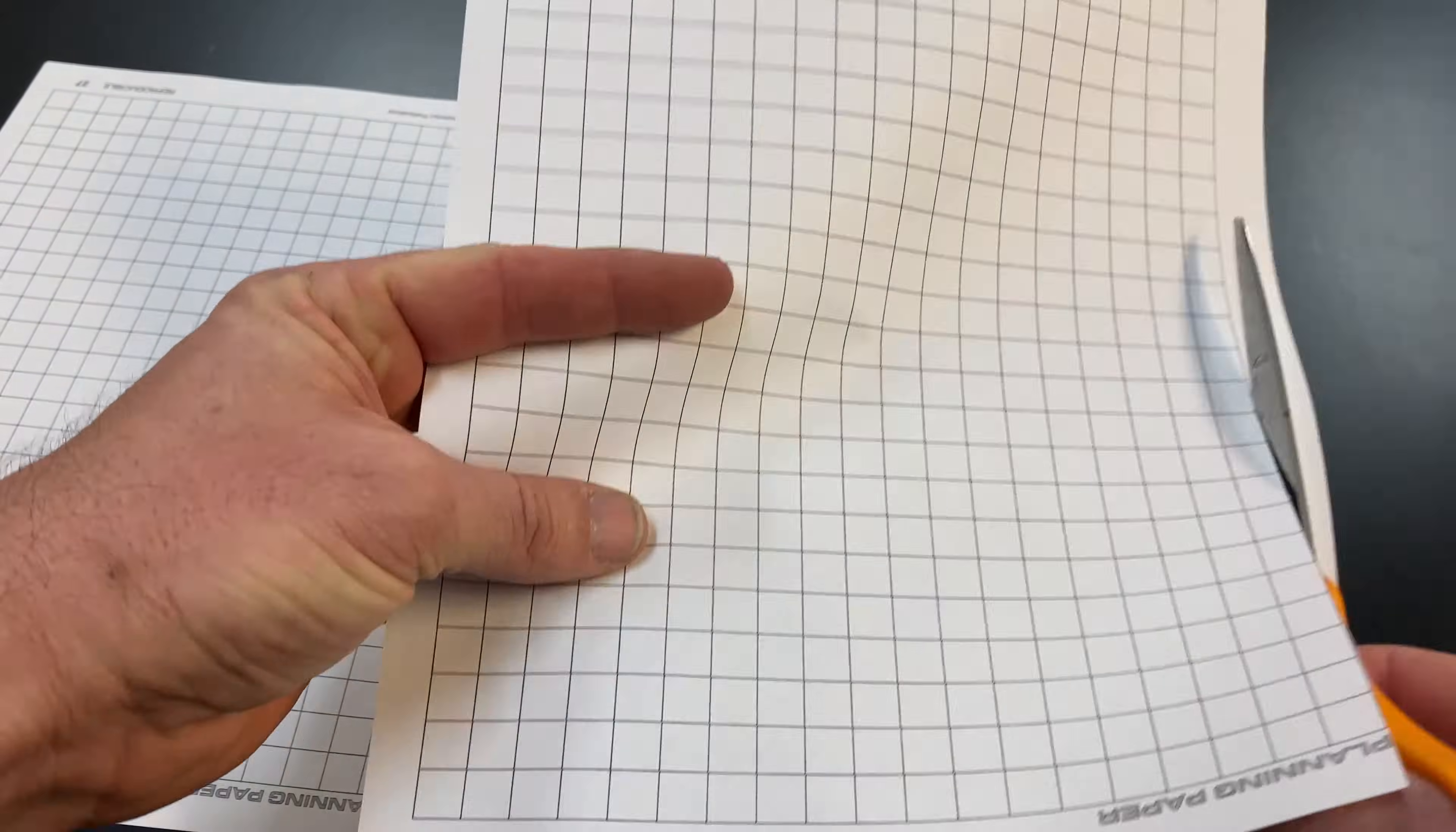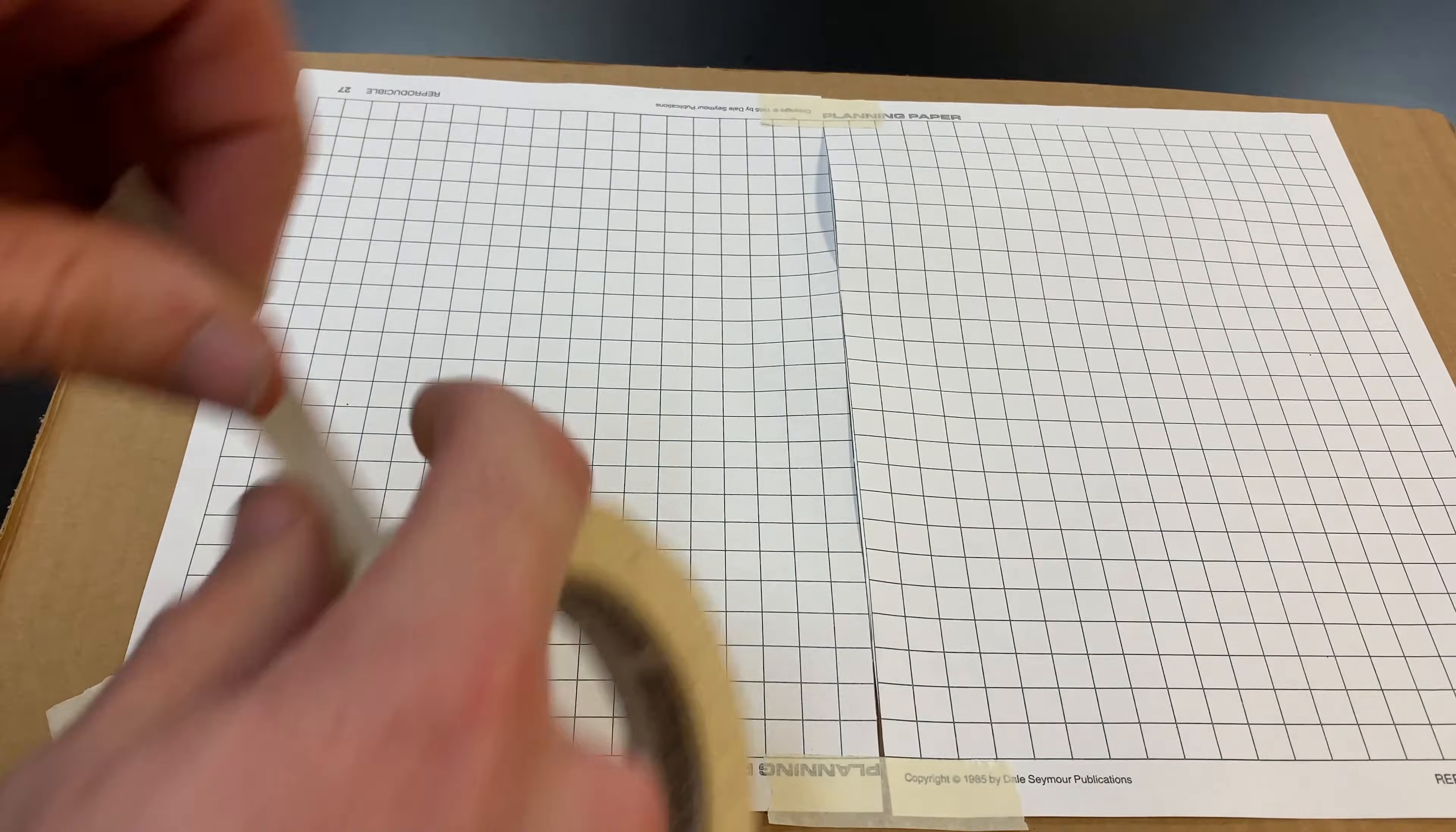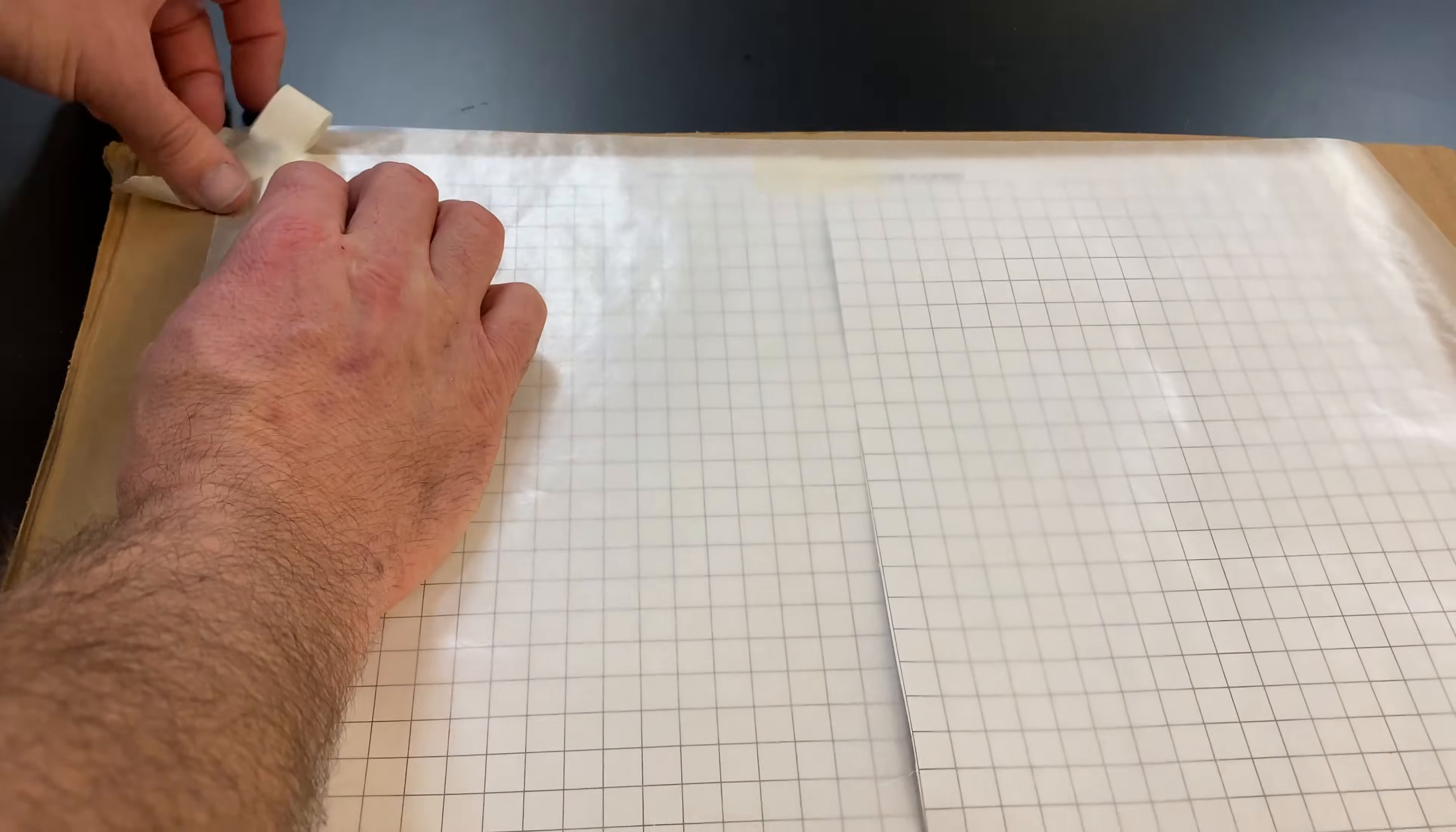Use a large piece of centimeter grid paper or tape two smaller sheets together. Tape the grid paper onto a large piece of cardboard. Then tape wax paper on top.